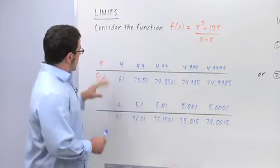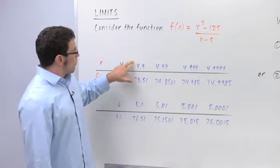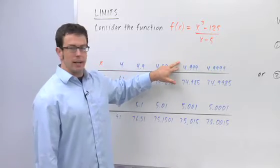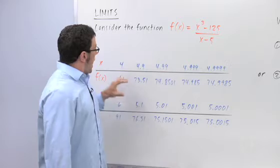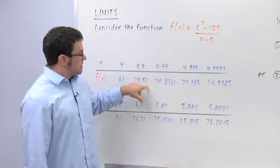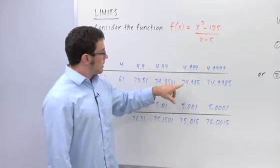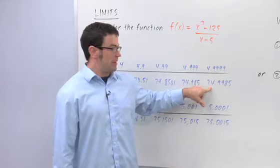So let's observe, I've made a table of values here, and I have the inputs 4, 4.9, 4.99, 4.999. These inputs are approaching 5. What are the values doing? Well, 61, 73.5 something, 74.8 something. You can see that these outputs are getting closer and closer to, it appears, 75.